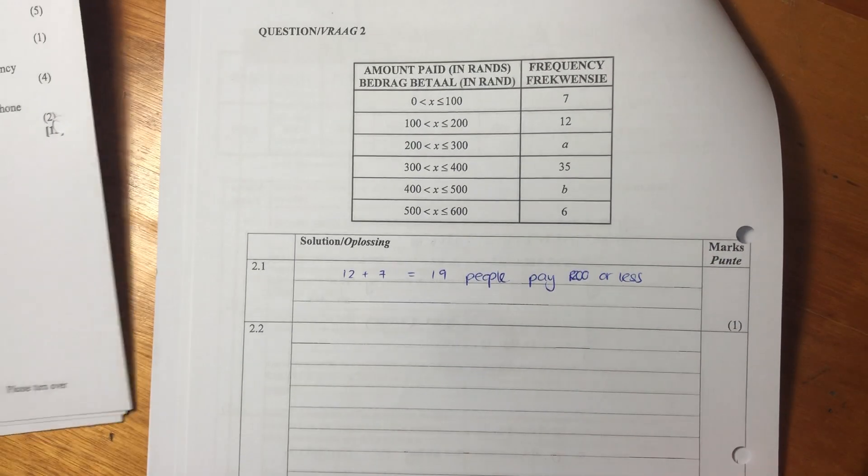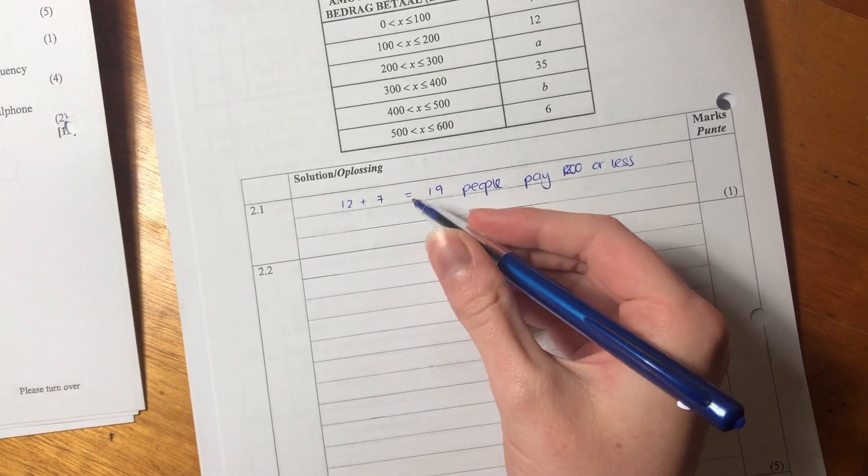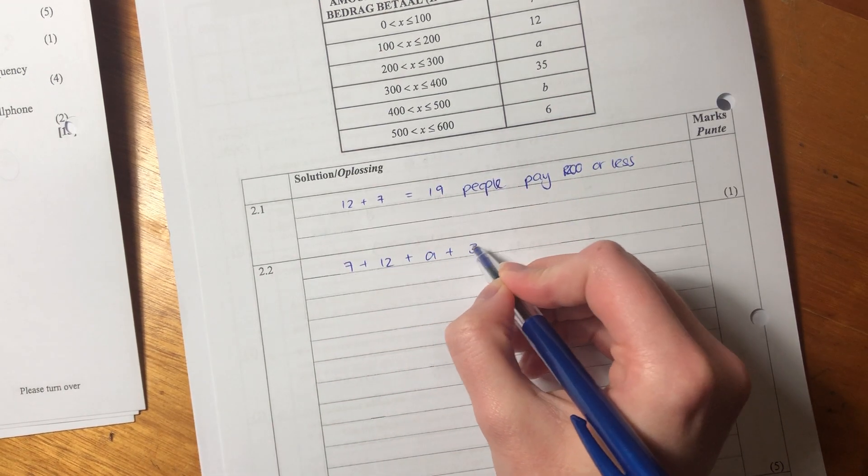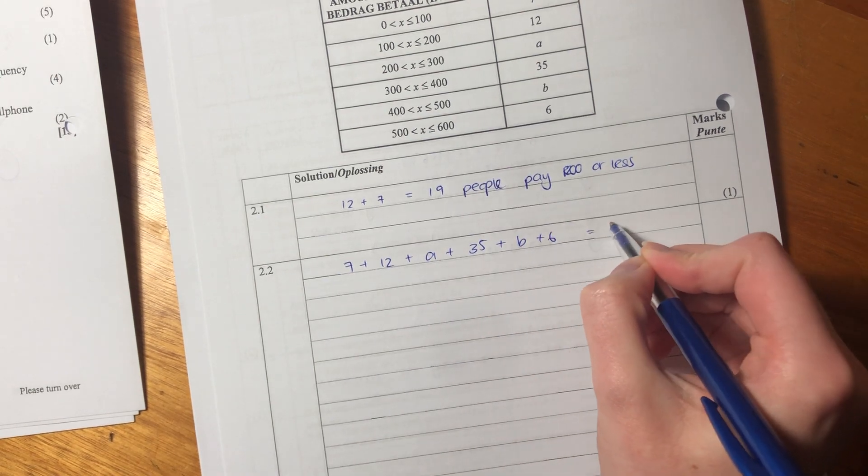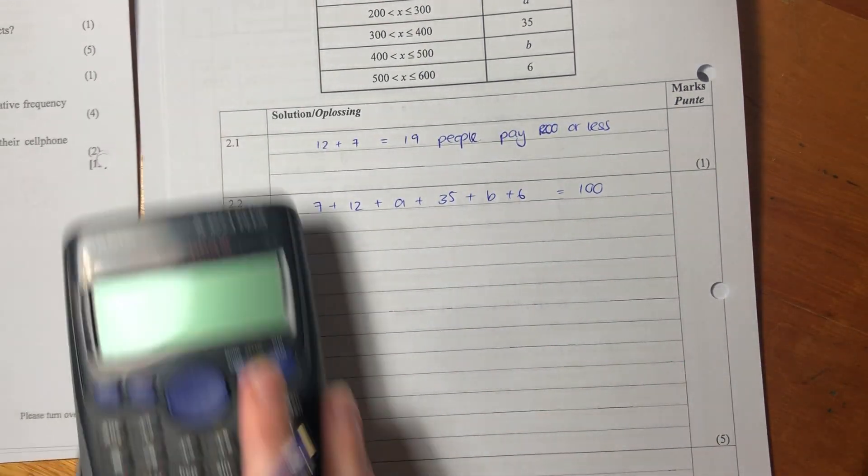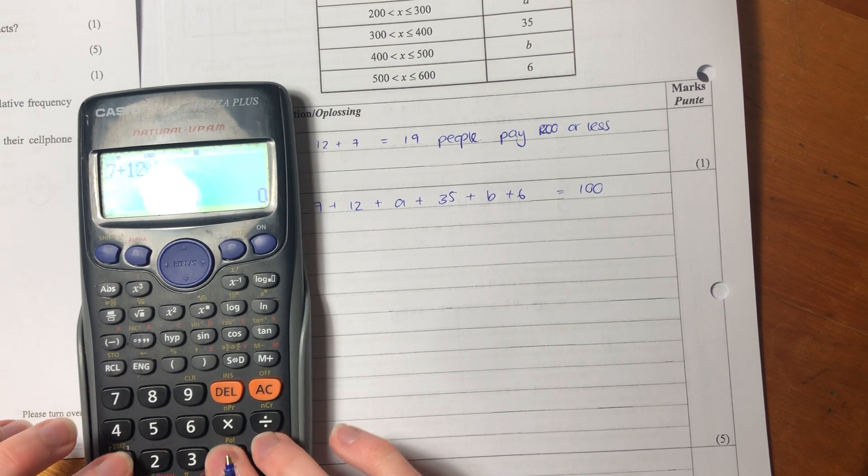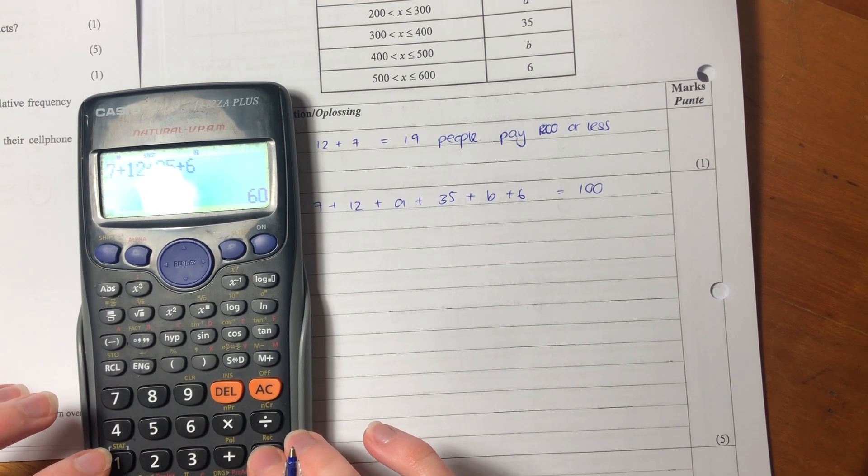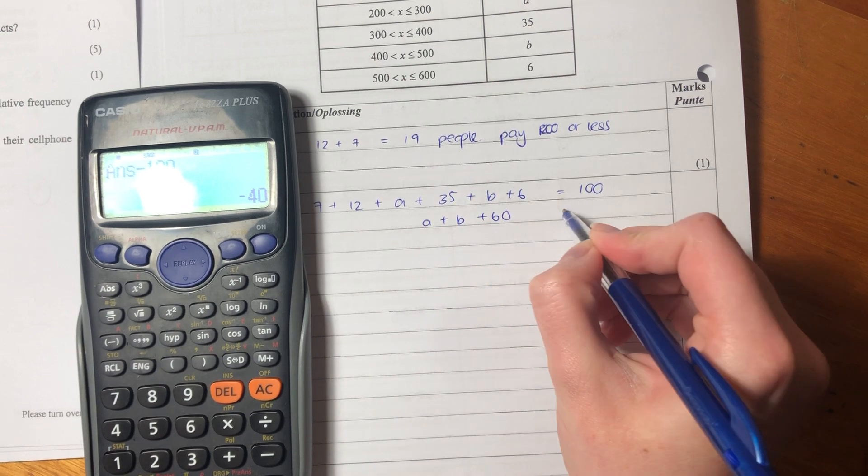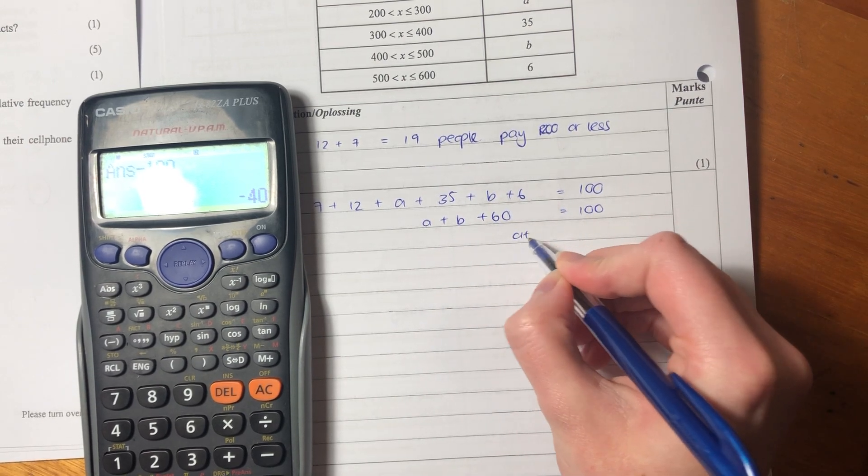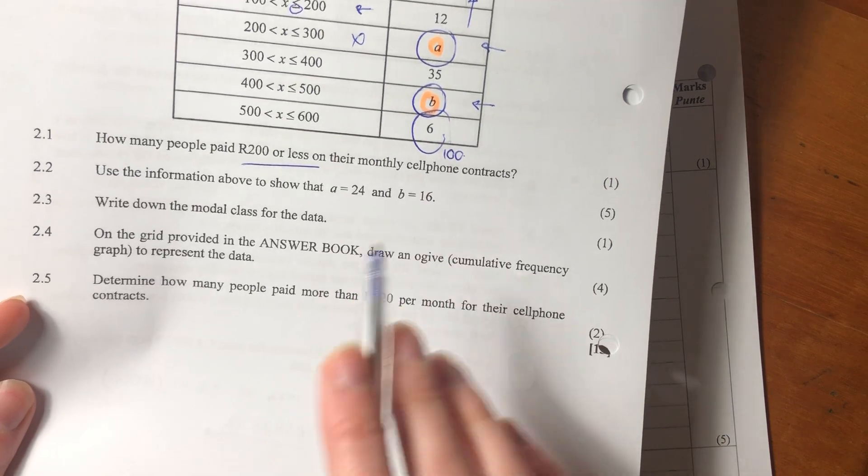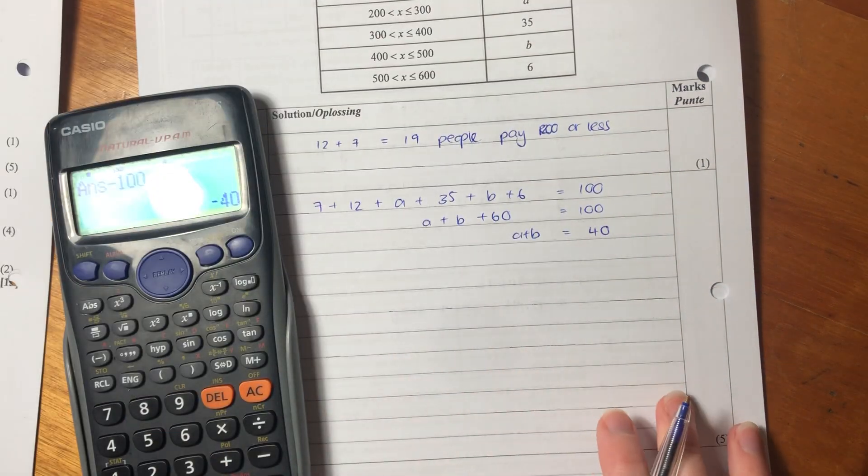We need as many simultaneous equations as we have variables to solve for. If we have two, we can solve for two variables. Let's write these out. We know that 7 plus 12 plus A plus 35 plus B plus 6 equals 100. Let's simplify this. If we add all the numbers: 7 plus 12 plus 35 plus 6 equals 60. So A plus B equals 40, which is really good news because we know that 24 plus 16 equals 40. We're kind of on the right track there.